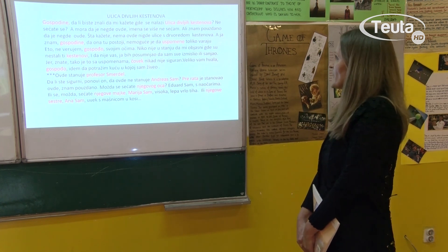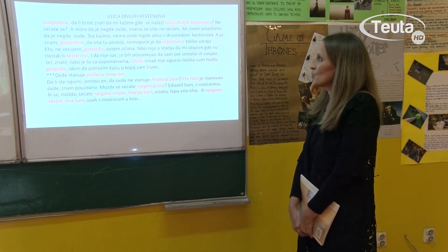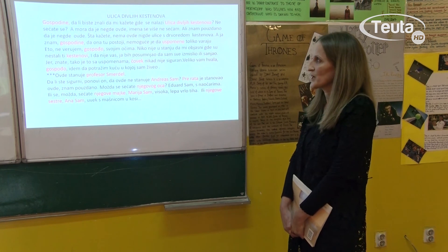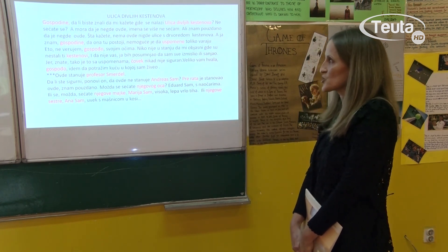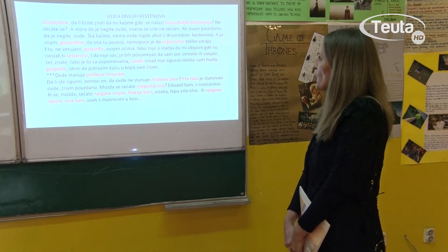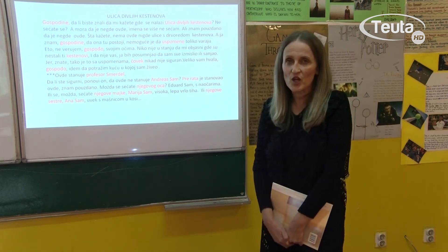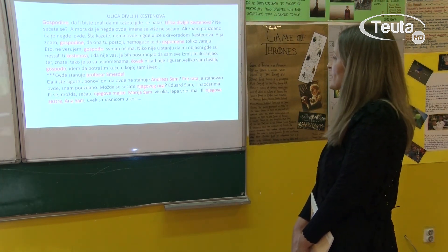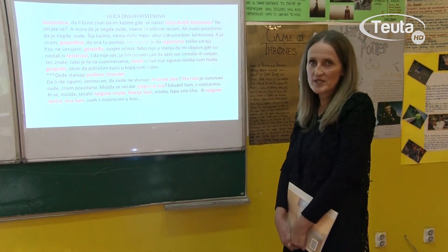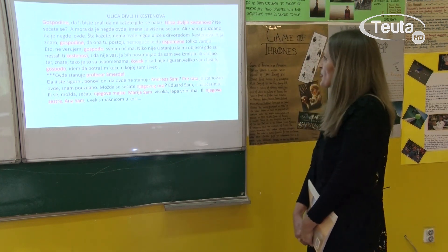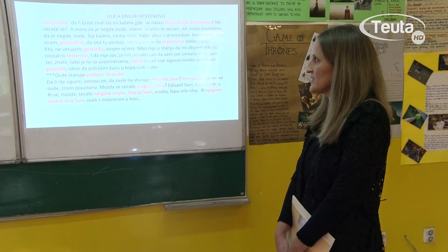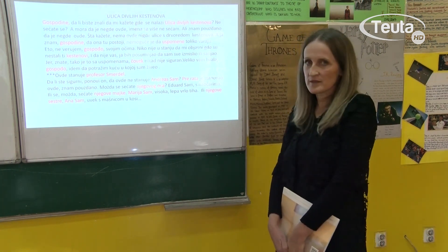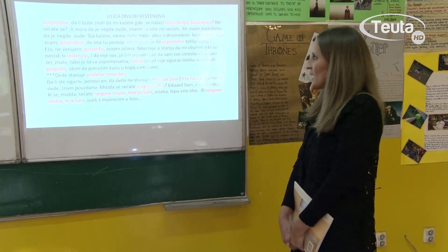Nemoguće je da uspomene toliko varaju — ko, šta? Uspomene — nominativ. Eto, ne verujem, gospodjo — ponovo oslovljavanje, obraćanje, vokativ, imenica gospodjo data je u vokativu. Niko nije u stanju da mi objasni gdje su nestali ti Kestenovi — ko je nestao? Kestenovi — nominativ. Čovjek nikad nije siguran — ko? Čovjek — osnovni oblik imenice, znači nominativ. Hvala, gospodjo — ponovo vokativ. Ovdje stanuje profesor Smerdel — ko stanuje? Subjekat, profesor Smerdel, nominativ.